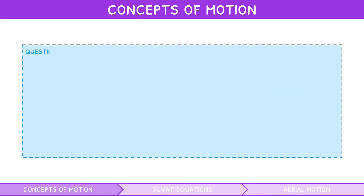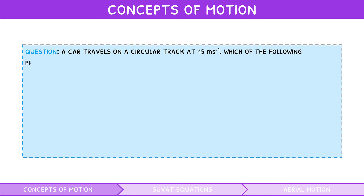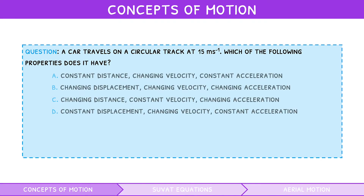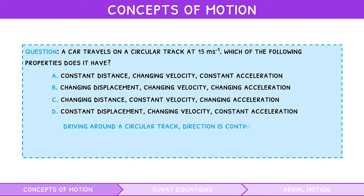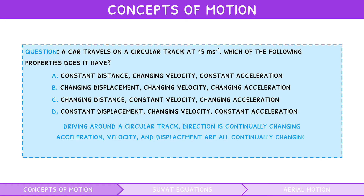A typical trick question that comes up on an exam: a car travels around a circular track at a constant speed of 15 metres per second. Which of the following properties does it have? Since the car is driving around a circular track, its direction is continually changing. Thus, despite its speed staying constant, its acceleration, velocity, and displacement are all continually changing. The answer is therefore B: changing displacement, changing velocity, changing acceleration.